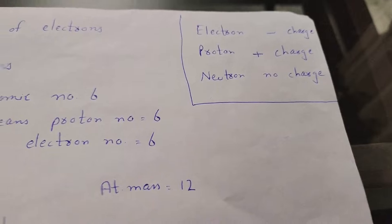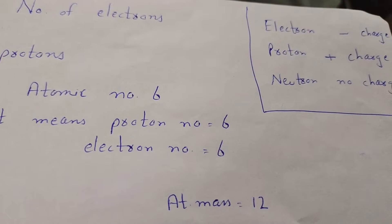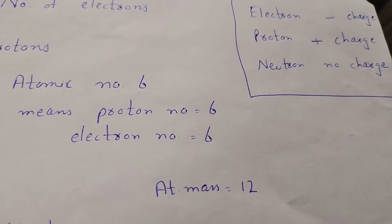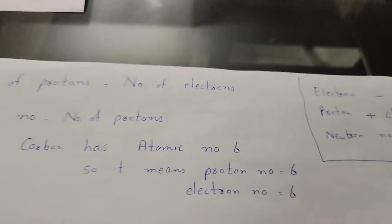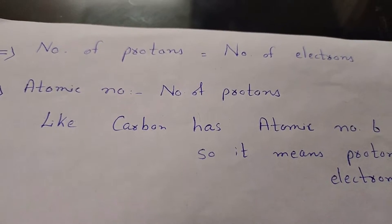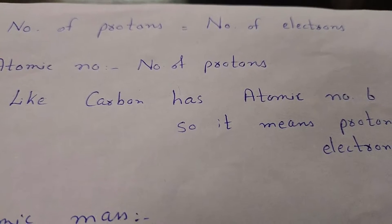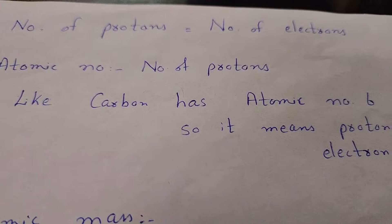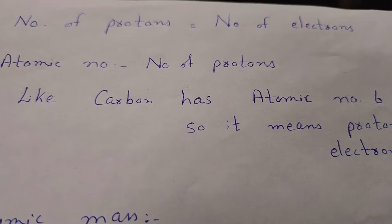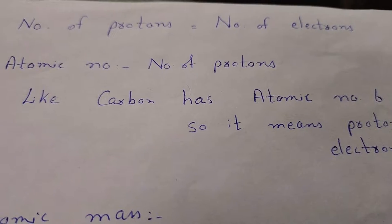From previous videos, we know that the electron has a negative charge, J.J. Thomson discovered the electron, Rutherford discovered the proton with a positive charge, and the neutron has no charge — it is neutral. The number of protons is equal to the number of electrons. So if oxygen has eight protons, it will surely have eight electrons.